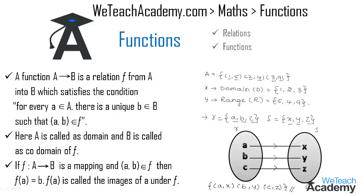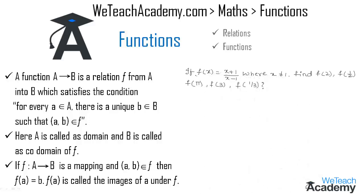Now let us consider another example. If f(x) = (x+1)/(x-1) where x ≠ 1, we have to find f(2), f(1/2), f(pi), f(3), and f(1/3). Let us find f(2) by replacing x with 2: we get (2+1)/(2-1) = 3/1 = 3. So f(2) = 3.